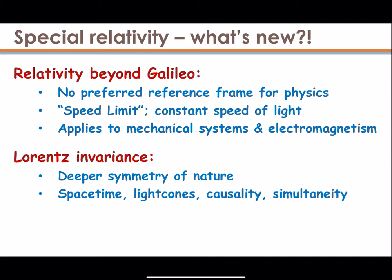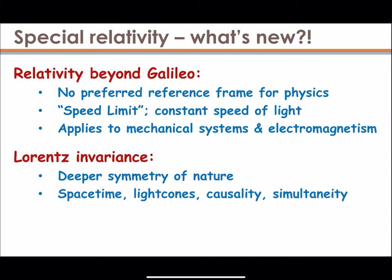We'll have a look at the idea of Lorentz invariance, a deeper symmetry of nature. We'll discuss this and understand where it comes from and what the consequences are. We'll talk about space-time and light cones, causality, and the breakdown of simultaneity. Finally, we'll be doing all of this rigorously, introducing the mathematical formulation of special relativity — the so-called four-vectors — discussing mass-energy-momentum relationships and E=mc², all derived from scratch.